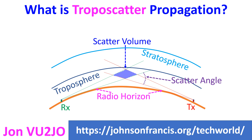HF is reflected typically by the ionosphere, much above the troposphere. Tropospheric scatter was used mainly by the military prior to the era of satellites.